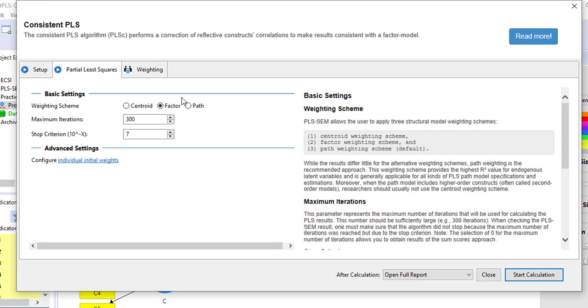Okay so partial least square and click factor, it is already selected. What you have to do is just press start calculation.